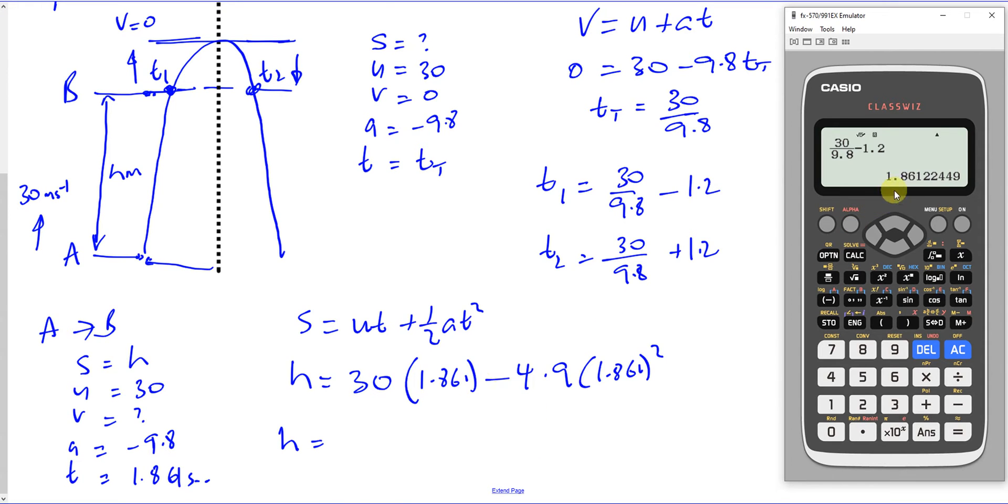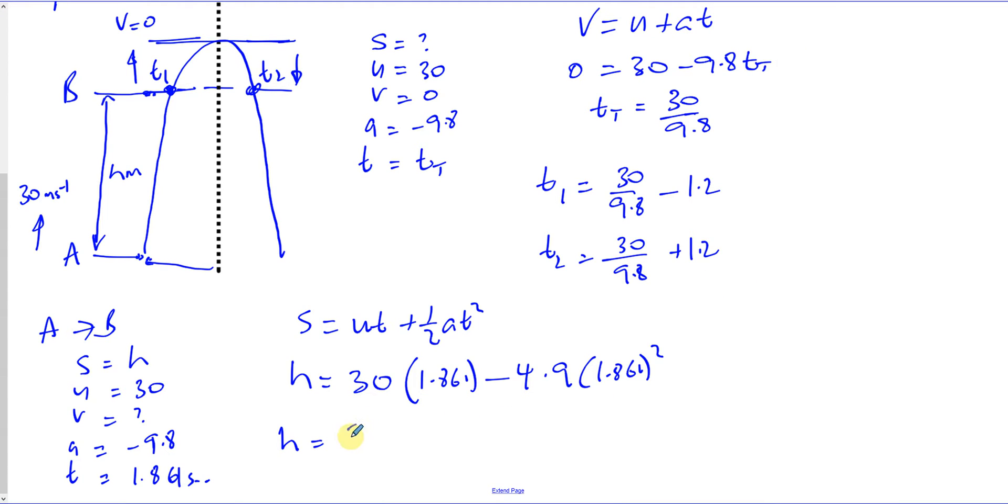We're going to take this value, and you can store it. Store it as A. So we're going to take this value, we're going to multiply it by 30. And then we're going to take away 4.9 times that squared. And that gives you 38.862, which you can write as 38.9 meters. That's one way of answering the question.